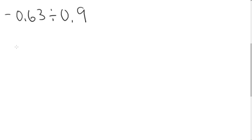Now let's look at division with decimals. We use the same integer operation rules. For example, negative 0.63 divided by 0.9: I have a negative divided by a positive, which gives me a negative. And 0.63 divided by 0.9 gives me 0.7, so the answer is negative 0.7.